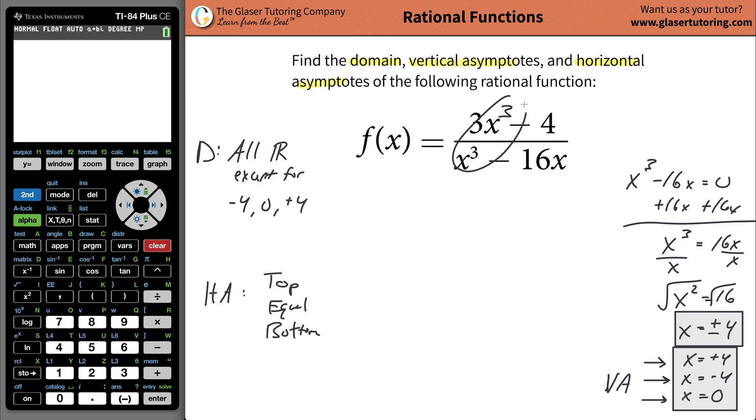If this was an x cubed, then that would be equally heavy. And if this was x to the fourth, then that would be top heavy. Notice how I could care less what this is. I'm just looking at the highest powers. So what we realize now is that anytime, or we can memorize, anytime you have a bottom heavy function, anytime it's bottom heavy, the horizontal asymptote will always be at y equals zero. You can memorize that.